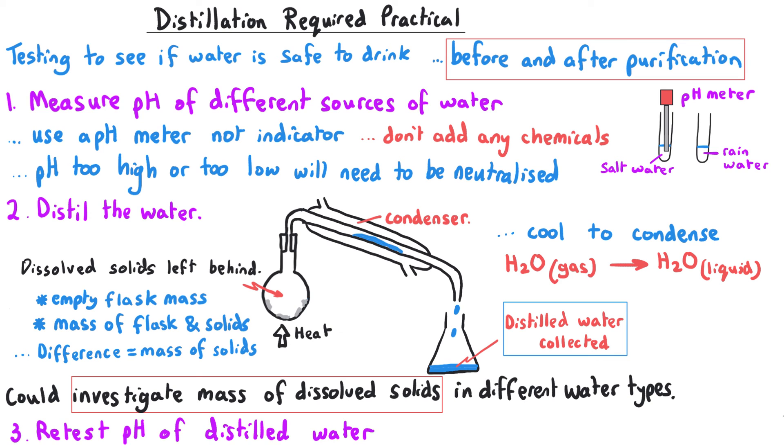The final step would be to retest the pH of the water and compare it to the original pH before it had been distilled. You would expect the pH of distilled water to be pH 7 regardless of whatever it was before distillation.